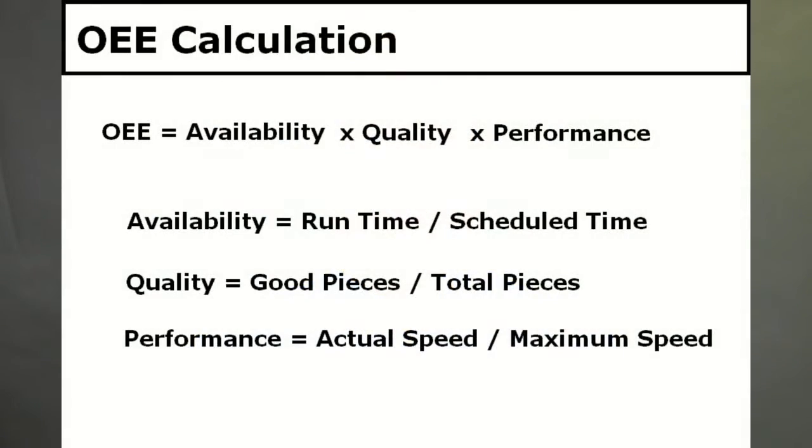Tracking and improving OEE is a critical component of lean manufacturing and continuous improvement programs and increases manufacturing productivity. The Production ACE system by Production Process provides the user with real-time OEE and historical analysis of OEE and its associated data.